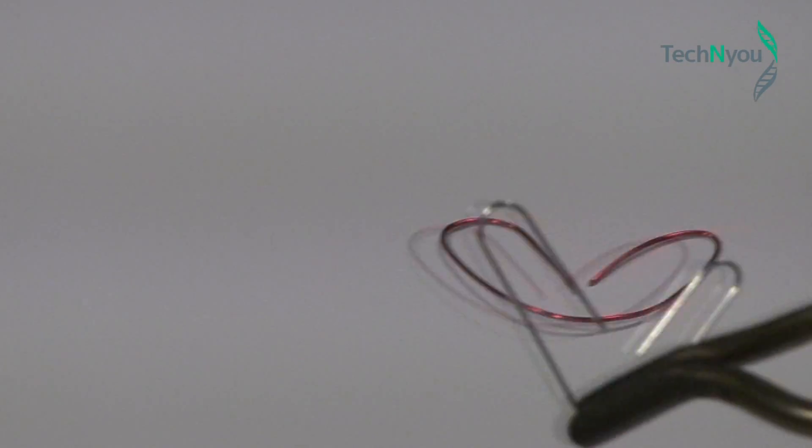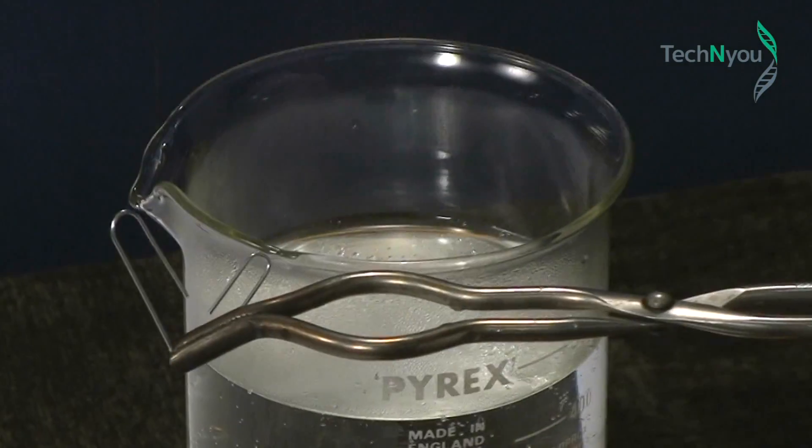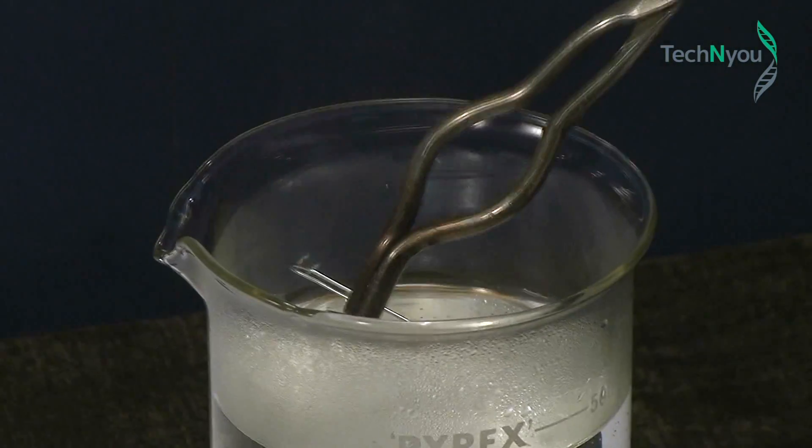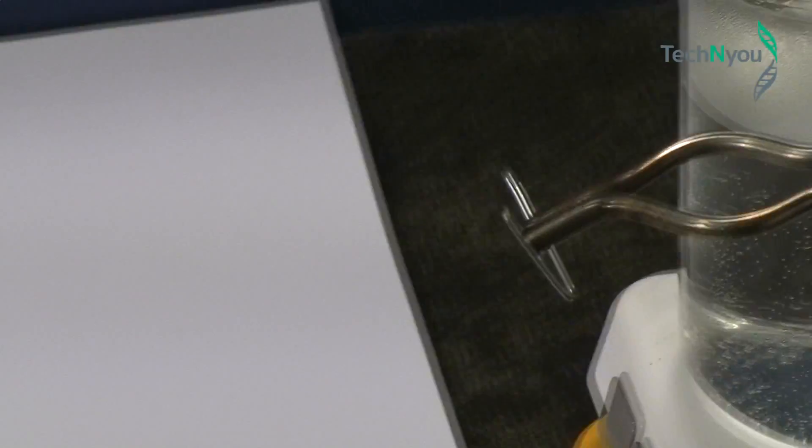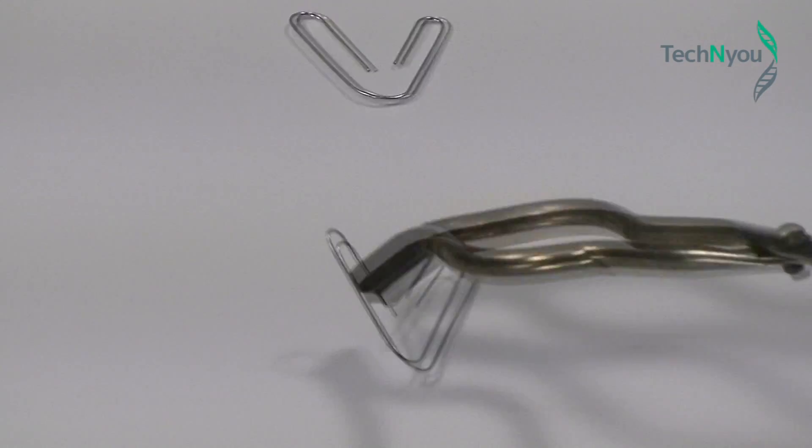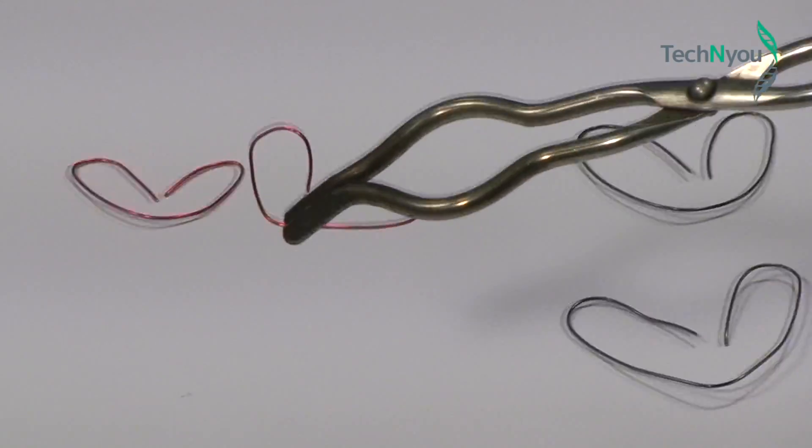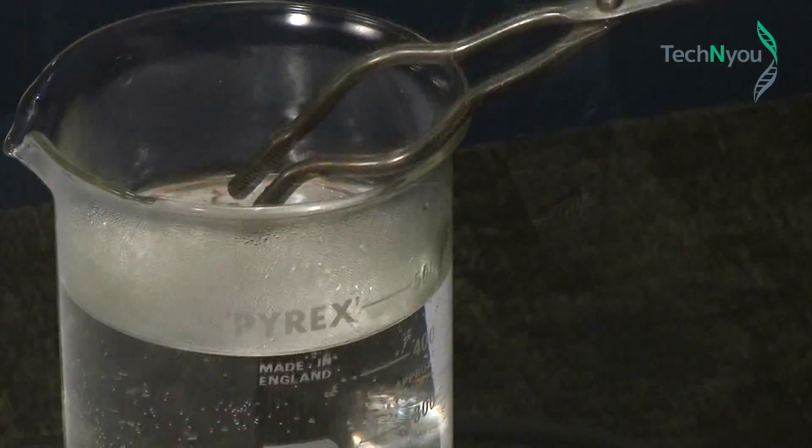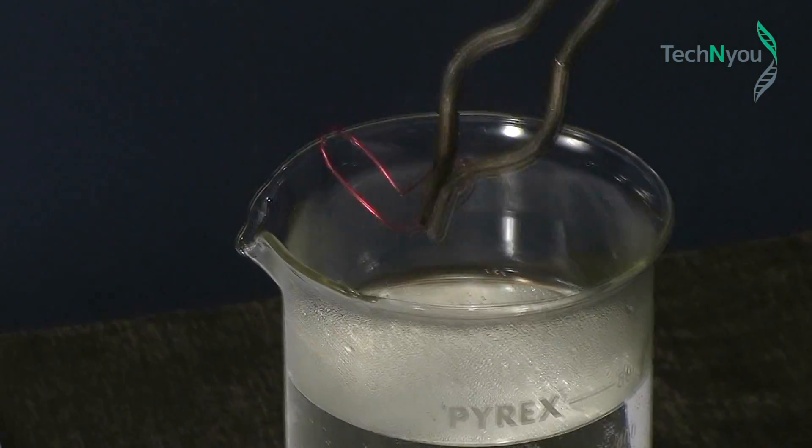So first we drop in our paper clip. As you can see, the shape we've bent into it is still the same in the hot water. We'll now drop in the copper wire. It too has kept its new V shape.